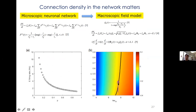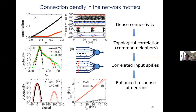Interestingly, as connectivity density increases, the firing rate actually decreases — the dynamics shift from asynchronous to oscillatory with lower firing rates. The reason is that higher density creates topological correlations: two neurons share common neighbors, so inputs are correlated. In a balanced state with correlated input, the current deviations allow neurons to fire more easily, so the circuit can sustain activity at a much lower firing rate — approaching the realistic one-hertz regime.